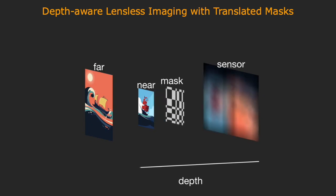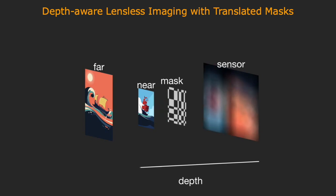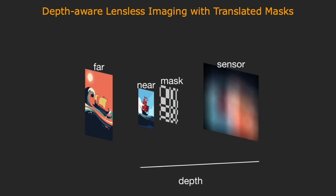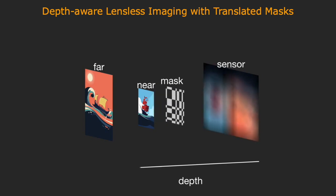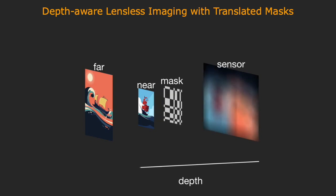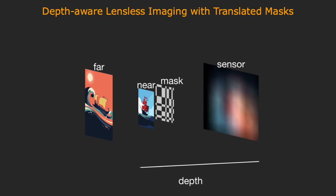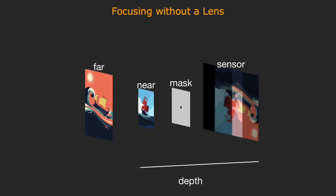We show that translated masks can be used to bring a computational focusing operator into a lensless imager, so that we can reduce the size of the reconstruction problem to a single depth plane and dramatically improve reconstruction speed. Let me illustrate the focusing operator with a simple mask — a pinhole.